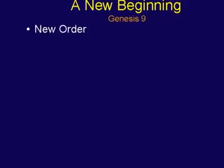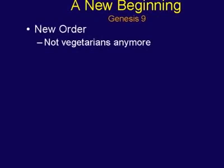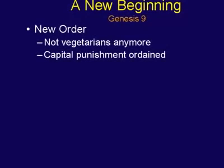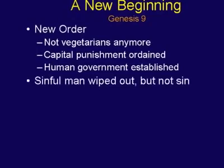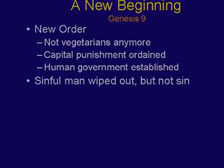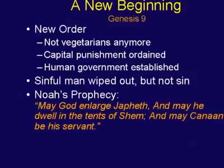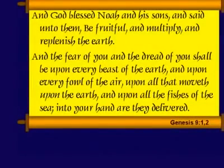Let's jump into chapter nine, which is our experience with a post-flood world. We're going to discover there's a whole new order of things. Noah's descendants are not vegetarians anymore — they're encouraged to eat meat. Capital punishment is ordained along with the institution of human government. Sinful man has been wiped out from the flood, but not sin. We're going to discover one of the first acts in the first family was the emergence of sin. And Noah will give us a prophecy that sets the stage for chapter 10. So let's jump in, chapter nine, verse one.